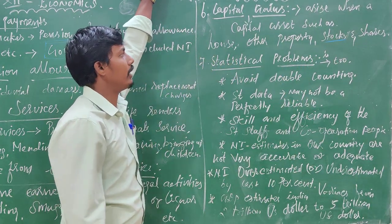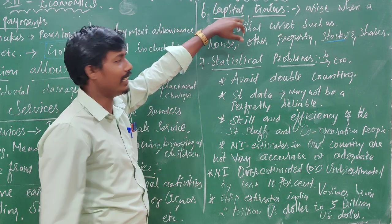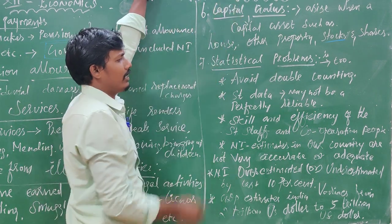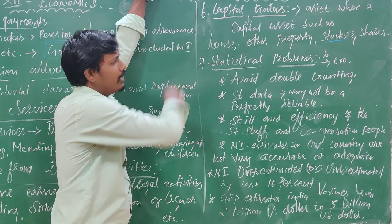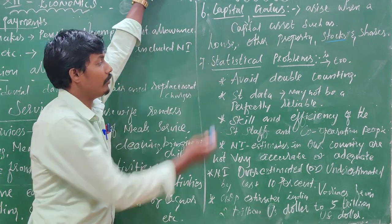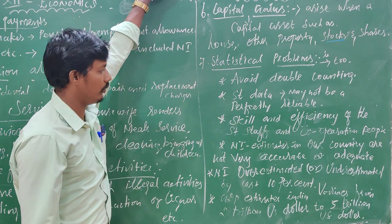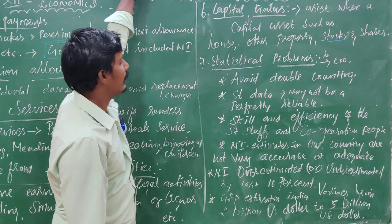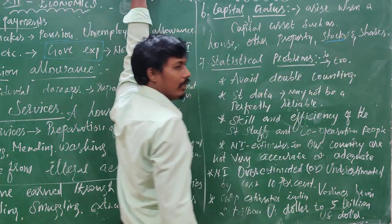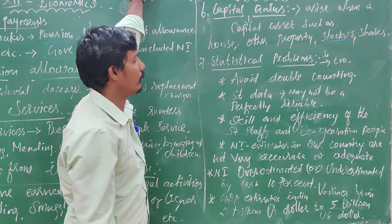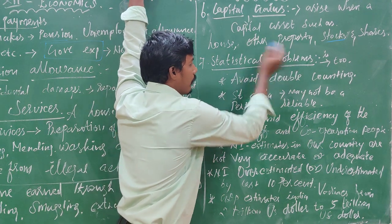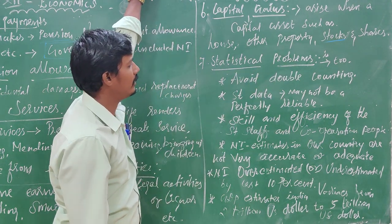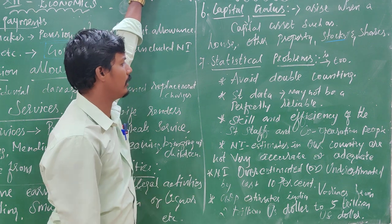When properties gain more value, those are capital gains. The price increase is not considered sufficient for national income. This is the statistical problem — it is large and very significant.